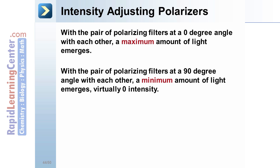On the contrary, with a pair of polarizing filters set at a 90 degree angle to each other, perpendicular, a minimum amount of light emerges, virtually none.